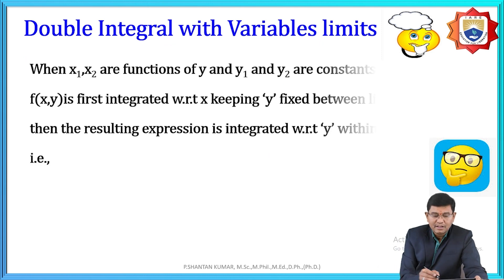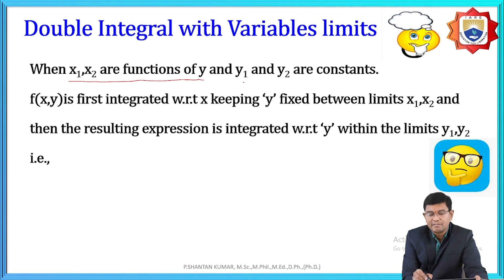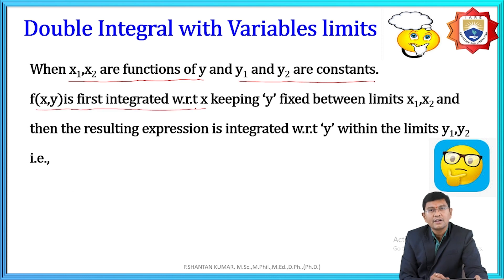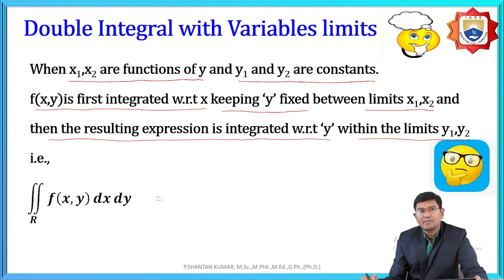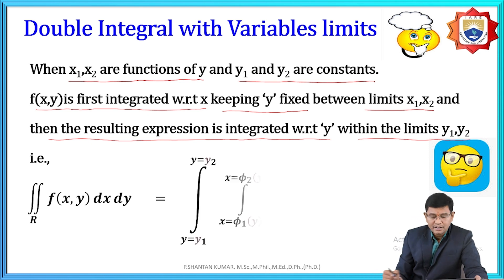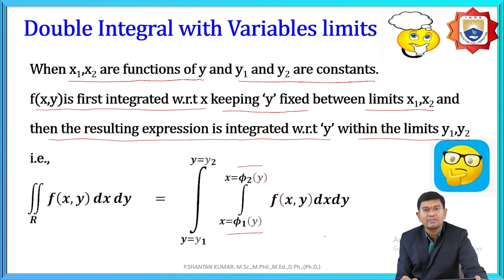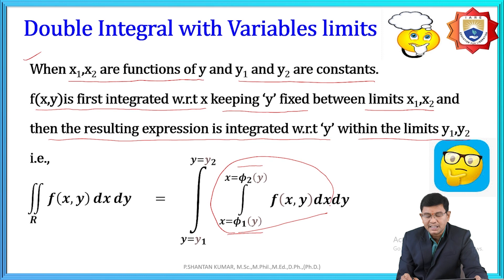Similarly, whenever x₁ and x₂ are functions of y and y₁, y₂ are constants, we first integrate f(x,y) with respect to x keeping y fixed, between x₁(y) and x₂(y). Then the resulting expression is integrated with respect to y between y₁ and y₂. So when x-limits are in terms of y, integrate with respect to x first, then with respect to y.